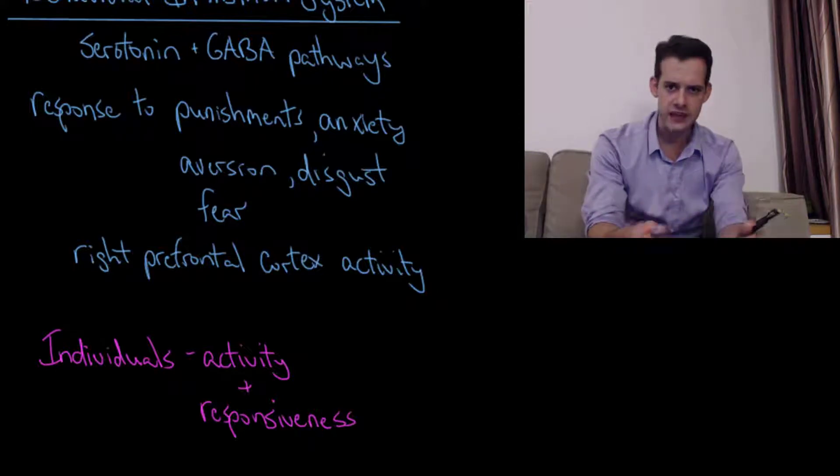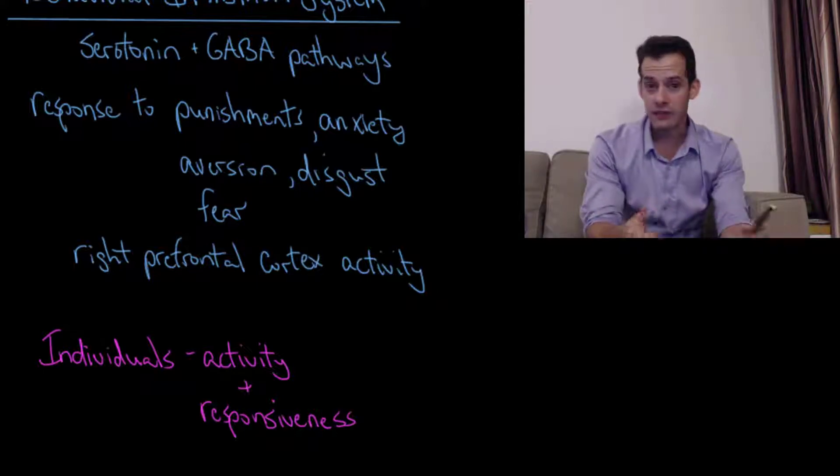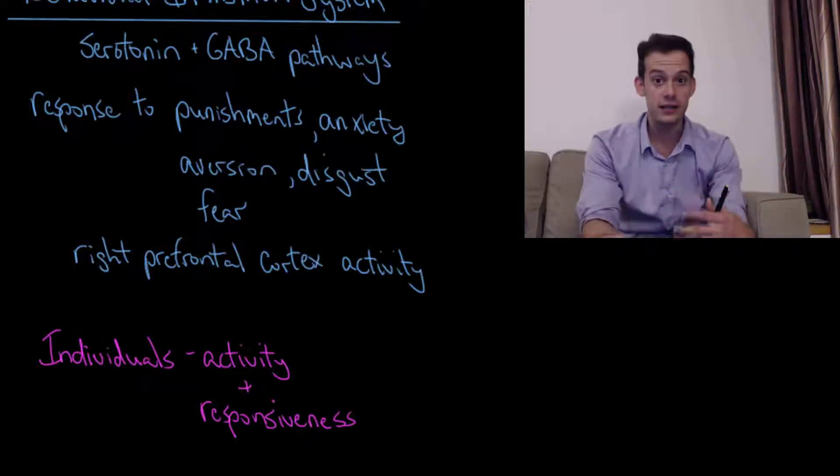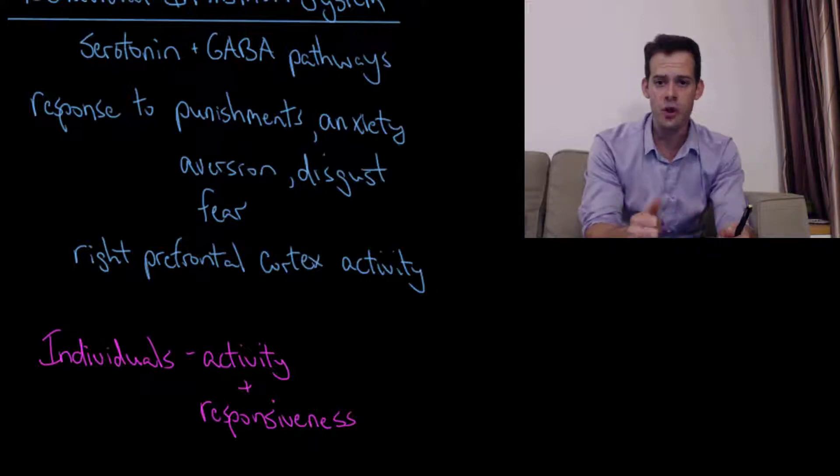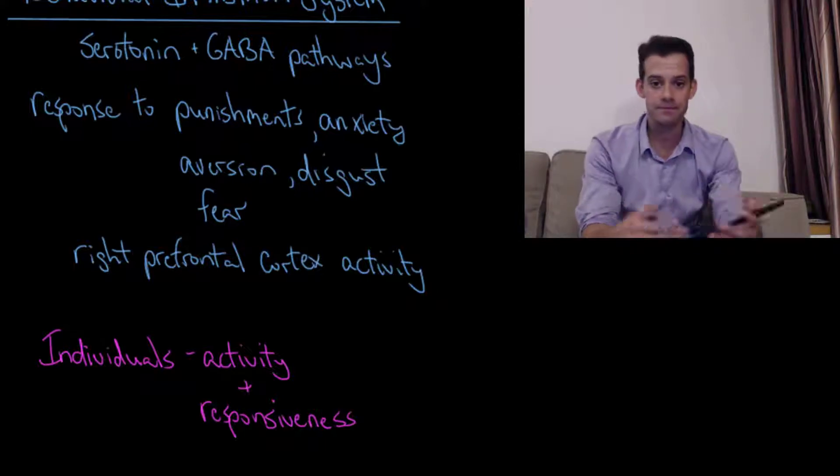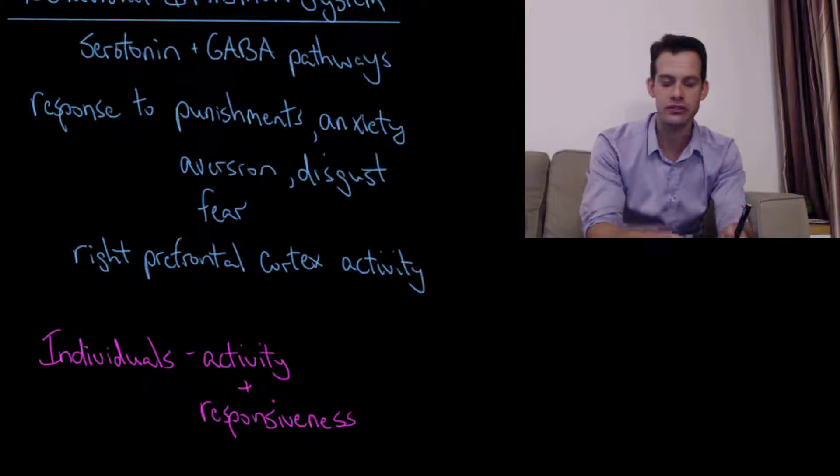Now you might say that talking about these systems here is avoiding the question that started this video, what causes trait differences? Because we might say, well, we have these two systems, but what's causing differences in these systems? Why is it that people would have different levels of activity or different levels of responsiveness? And you might wonder, is it genes that are sort of programming these two systems or do people have the ability to change these systems? Can they transform their ways of dealing with the unknown? Can they change their levels of emotionality to certain situations? And that's something that we'll consider in a future video.